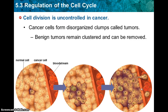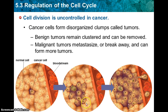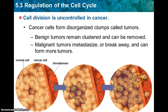Benign tumors remain clustered and can be removed. Malignant tumors are tumors that have metastasized — they break away and can form more tumors by getting into the bloodstream and replicating to form new tumors elsewhere.